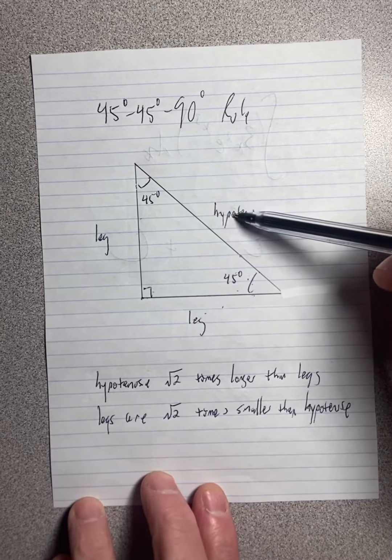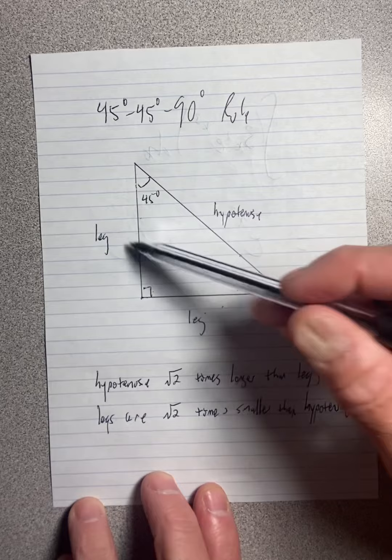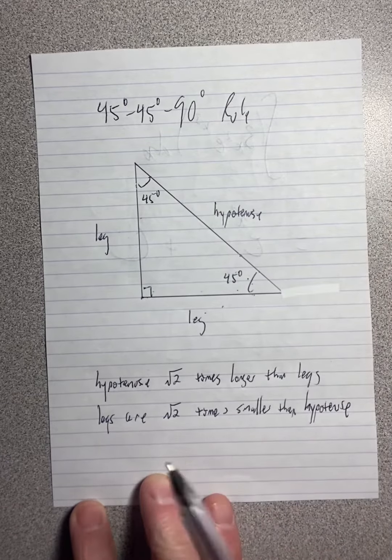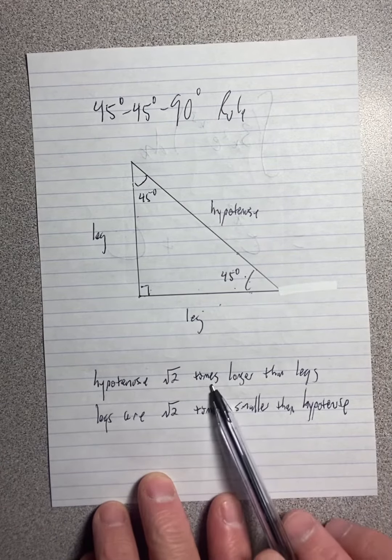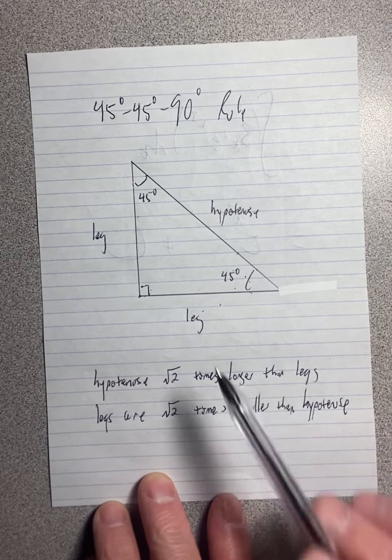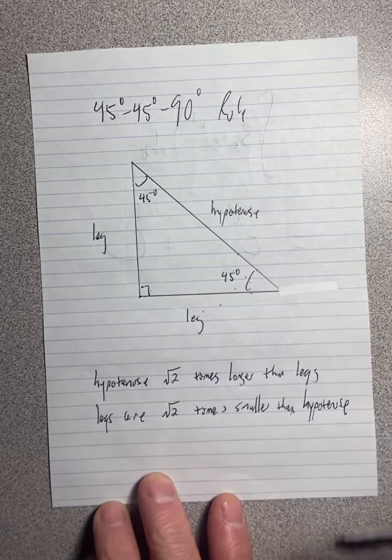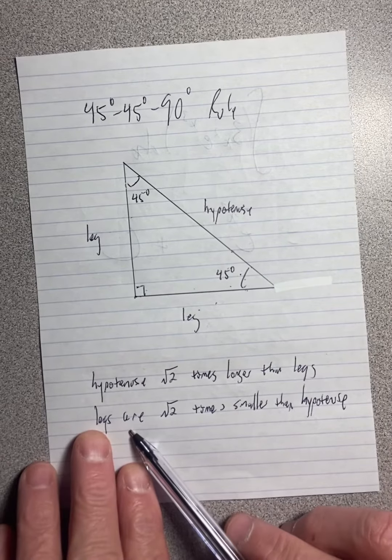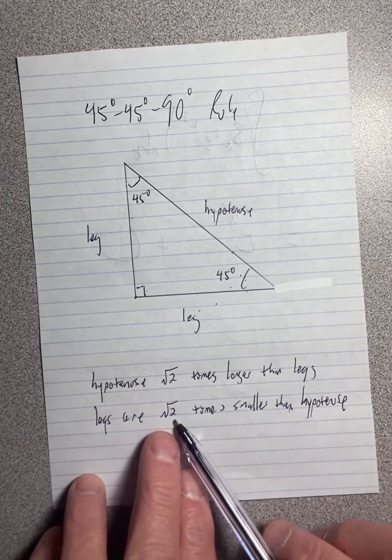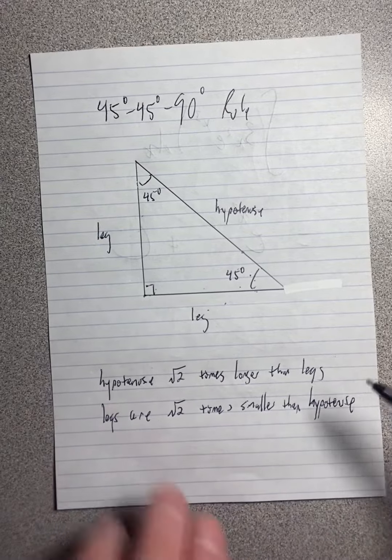Now, the hypotenuse is obviously longer than either one of the legs. And in fact, the rule is that the hypotenuse is square root of two times longer than one of the legs. Either leg, because they're both the same distance. And the legs, each one, are square root of two times smaller than the hypotenuse.